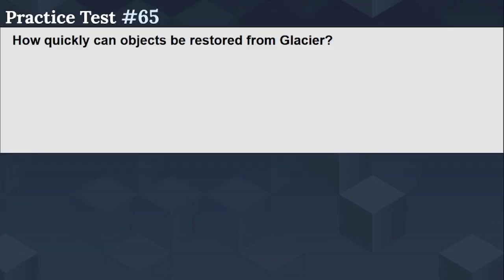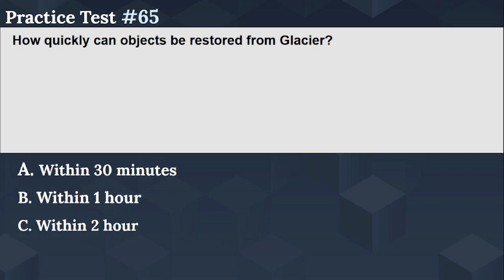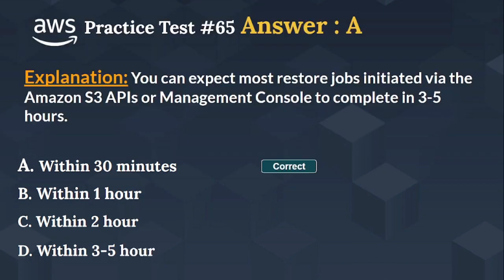The next question is: How quickly can objects be restored from Glacier? Option A: within 30 minutes. Option B: within 1 hour. Option C: within 2 hours. Option D: within 3 to 5 hours. You can expect most restore jobs initiated via the Amazon S3 APIs or Management Console to be completed in 3 to 5 hours.